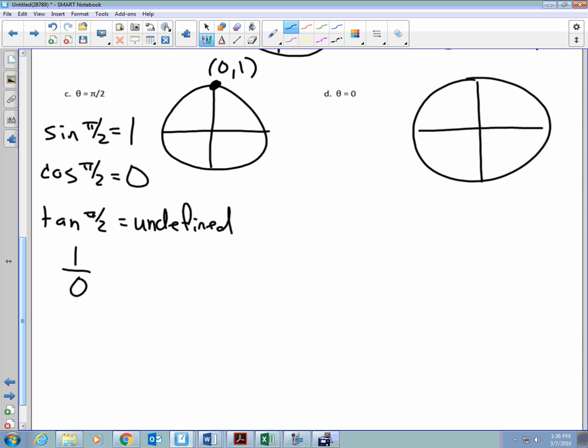Let's switch it up. Let's go theta equal to 0. Do I have to make a triangle for theta equal to 0? What is the location of 0? 1, 0. What's the sine of 0? 0. What's the cosine of 0? 1. What's the tangent of 0? Come on. It would be 0 divided by 1, which is 0. If 0 is in the denominator, it's undefined. It's in the numerator.